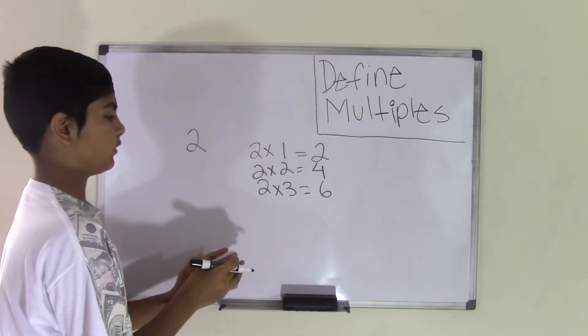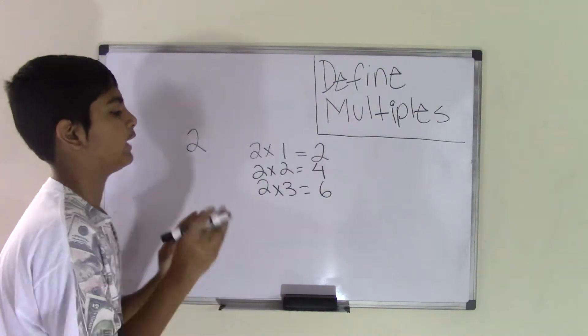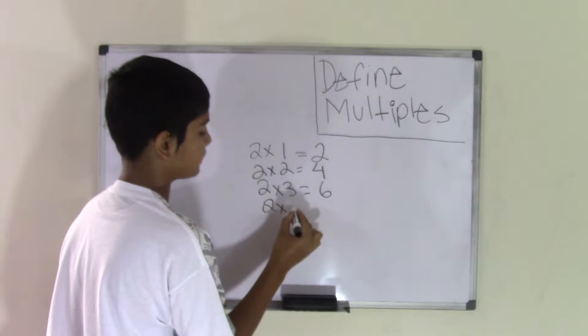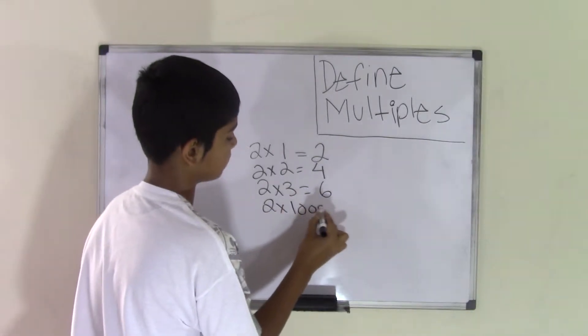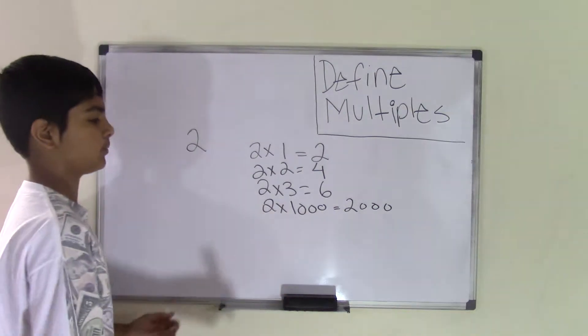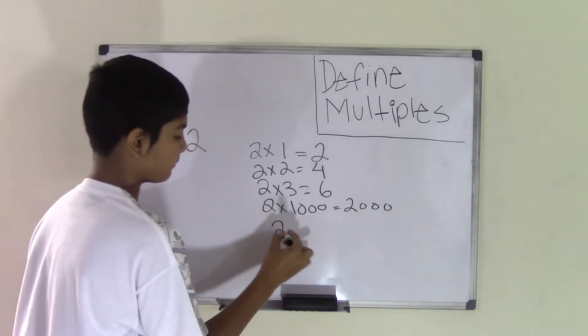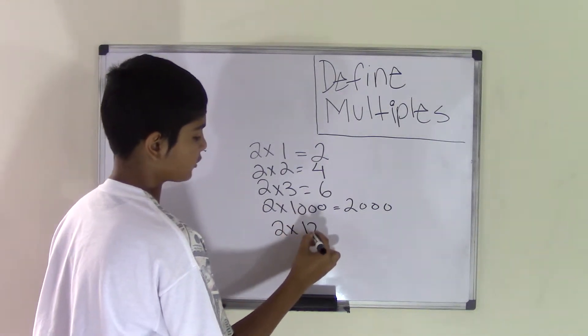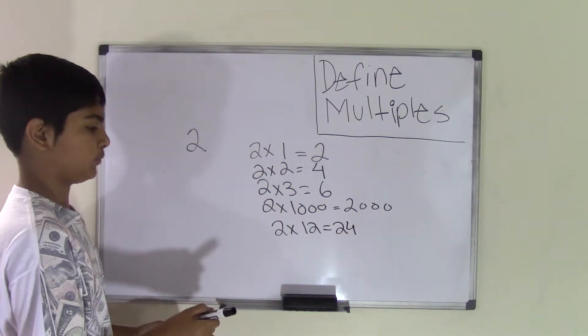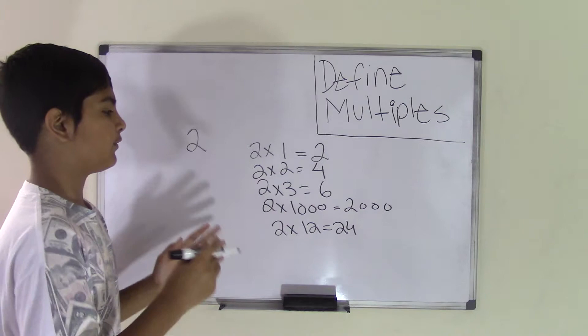The multiples of 2 would be 2 times any number. We can also say 2 times 1,000. That equals 2,000 and 2,000 is a multiple of 2. We can say 2 times 12. That equals 24. 24 is a multiple of 2. So that's how we find the multiples.